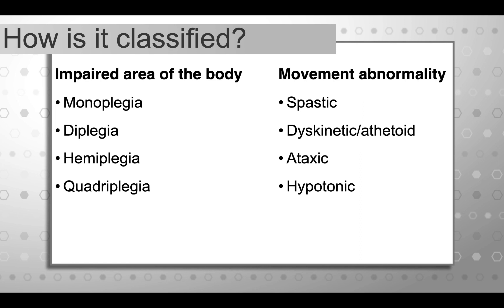Going back to traditional classification of cerebral palsy by impaired area of the body: monoplegia is when one limb is involved; diplegia is when all four limbs are involved but the legs are more involved than the arms; hemiplegia is when one side is more involved than the other — right or left; and quadriplegia is when all four limbs are involved. Diplegia and quadriplegia are on a continuum — in diplegia the arms retain quite a bit of function, whereas in quadriplegia there's a major loss of function in both arms and legs.